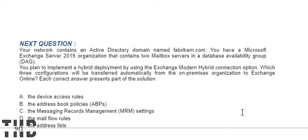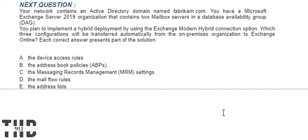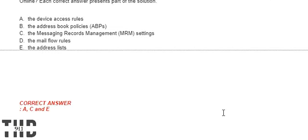Your network contains an Active Directory domain named Fabricum.com. You have a Microsoft Exchange Server 2019 organization with two mailbox servers in a database availability group. You plan to implement a hybrid deployment using the Exchange Modern Hybrid connection option. Which three configurations will be transferred automatically from the on-premises organization to Exchange Online? Option A: The device access rules. Option B: The address book policy. Option C: The messaging record management settings. Option D: The mail flow rules. Option E: The address list. The correct answers are Options A, C, and E.